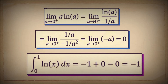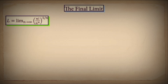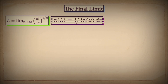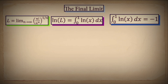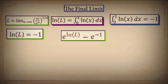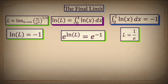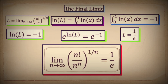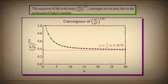Therefore, the entire limit is −1 + 0 − 0 = −1. We have conclusively shown the integral from 0 to 1 of ln(x) dx equals −1. Retracing our steps: we defined L as the nth root of n factorial over n to the power of n, took the log, transformed the discrete sum into a continuous integral, and calculated that integral to be −1. So ln(L) = −1, which means L = e to the power of −1, or 1/e.